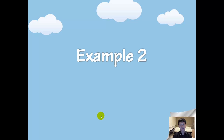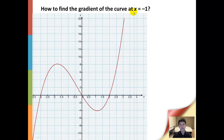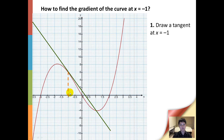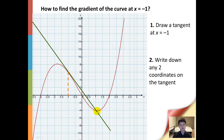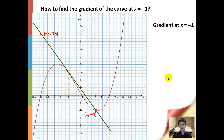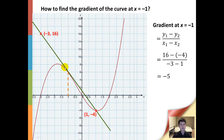Let us look at another example. How do we find the gradient at x equals negative 1? First, we need to draw a tangent at x equals negative 1. Now even though it cuts the curve at other points, it is fine. We then write down any two coordinates on the tangent. To find the gradient of this tangent, we shall use the formula. By pressing the calculator, we find that the gradient at x equals negative 1 is negative 5.